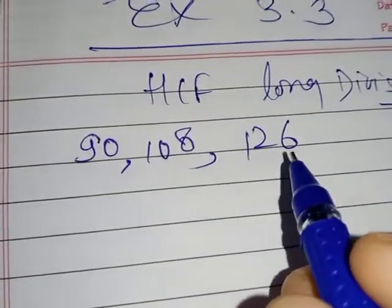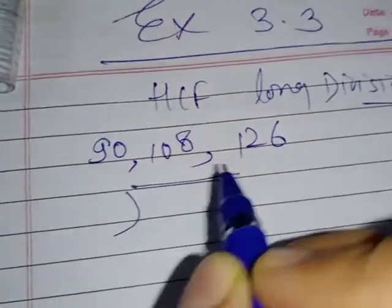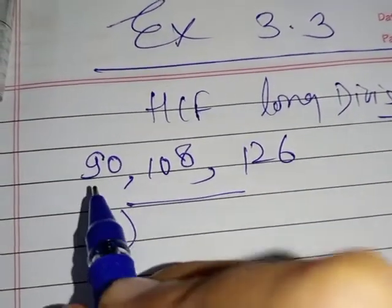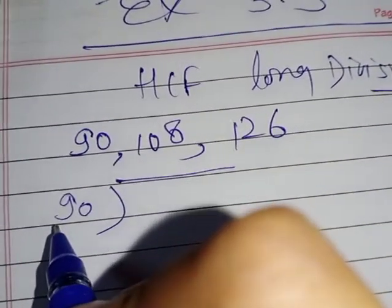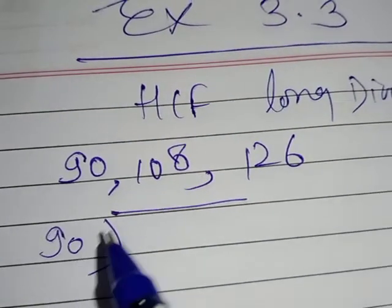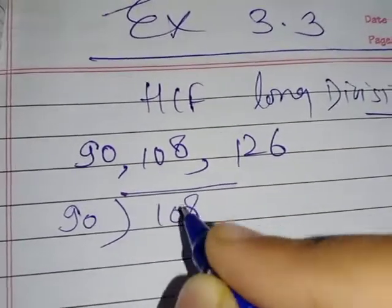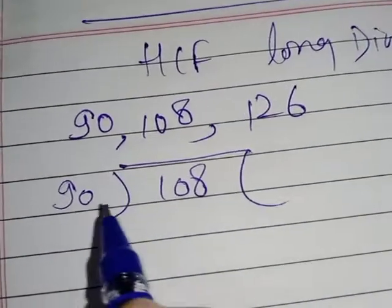First of all, the first step is make a column of division. After making this division column, first number, whatever it is, that you write in the dividend place. And divisor place, sorry. And then 108 in the place of dividend like this. And after this, you solve this 90 and 108.